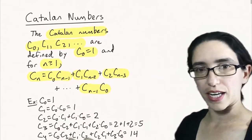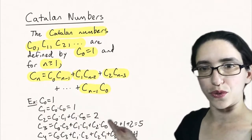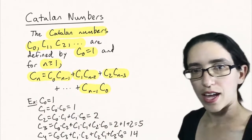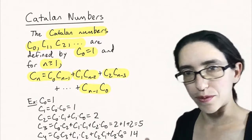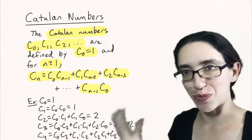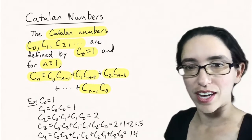So the first few Catalan numbers are 1, 1, 2, 5, 14. And if you see this sequence coming up, you might guess that you have the Catalan numbers as your sequence.